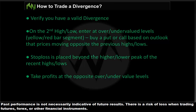Let's walk through the trade one more time. First, verify a valid divergence trade. On the second high or low, enter at over- or undervalued levels — either a yellow or red bar segment. Then buy a put or call — a directional trade — based on the outlook that prices will move in the opposite direction. A stop loss is placed beyond the higher or lower peak of the recent highs or lows. We look to take profits at the opposite under- or overvaluation levels.